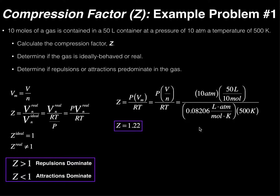Plugging this into a calculator, the compression factor Z is 1.22 — that is our unitless answer. To determine if it's ideally behaved: to be truly ideal Z would have to be exactly 1. It's not — it's 1.22 — so this gas is behaving as a real gas with deviations from ideal behavior.